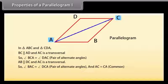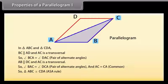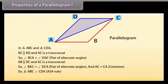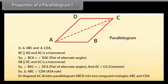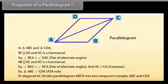So by using the ASA rule, triangle ABC is congruent to triangle CDA. Or we can say that diagonal AC divides parallelogram ABCD into two congruent triangles ABC and CDA.